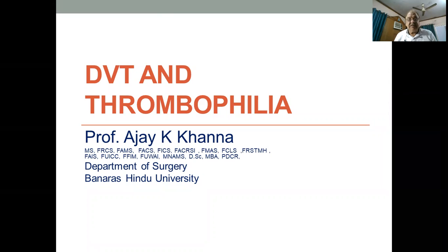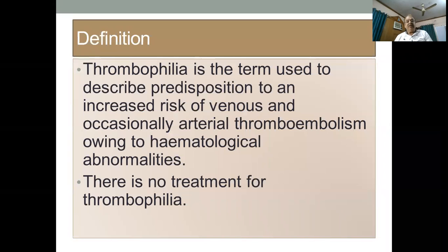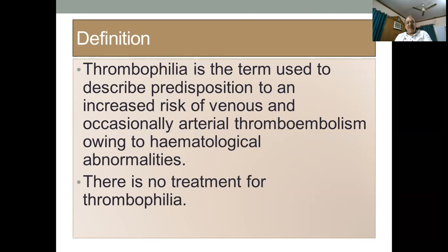Good afternoon, friends. What I'm going to tell you is about deep vein thrombosis and its association with thrombophilia. Thrombophilia is the term used to describe predisposition to an increased risk of venous and occasionally arterial thromboembolism owing to hematological abnormalities. Though we define the term thrombophilia, even if you make a diagnosis of thrombophilia, there is no treatment for thrombophilia itself. We only treat when there are complications because of thrombophilia — such as venous thrombosis — but thrombophilia as such cannot be treated.